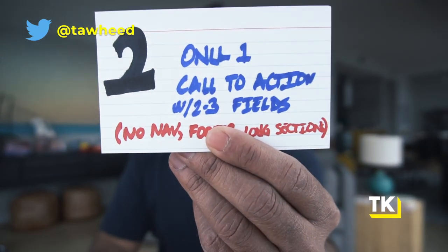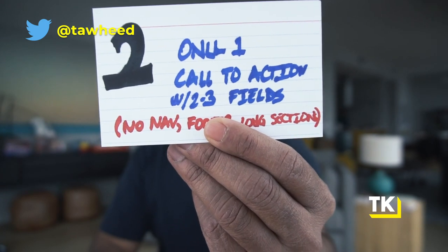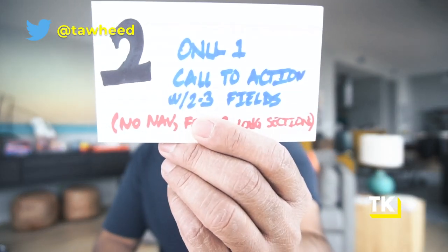Principle number two is there should only be one call to action with two to three fields max. I've been to landing pages that want your social security number, email, phone number, company, number of employees, revenues — and I'm like, I don't even know you. A landing page is in a lot of ways the first date: you don't want to go too deep. You just want to get to know each other. So it's super important to have one call to action with just two to three fields.